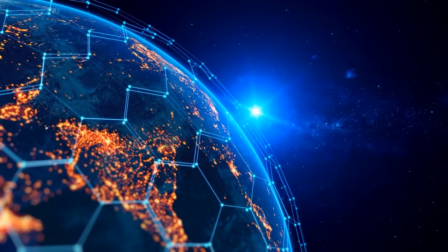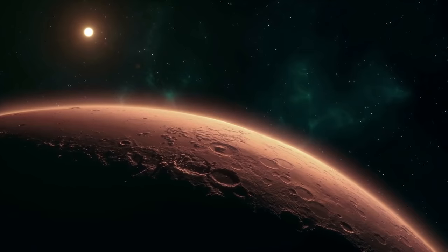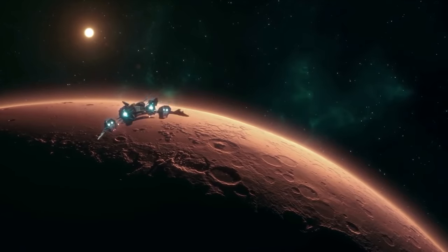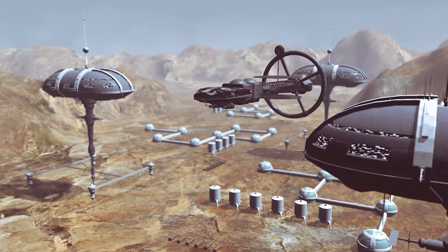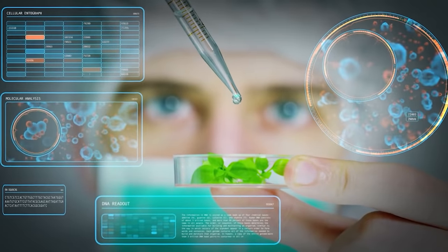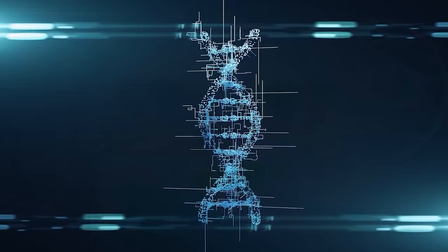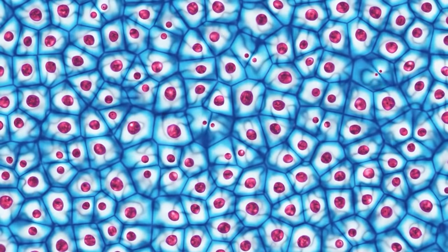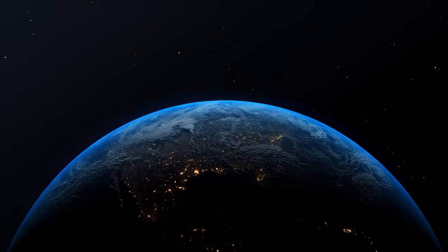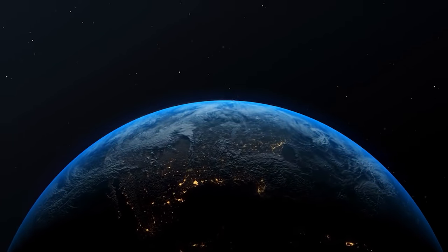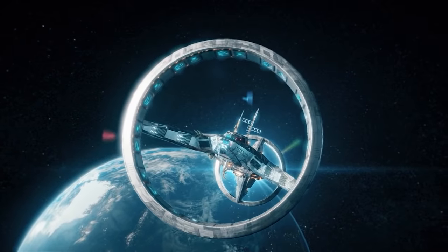Once our civilization can reach type 2, we will no longer suffer from energy-related problems in practical life. This will also eliminate poverty. We would be able to freely travel to and return from any planet in the solar system, and would take our first steps toward colonizing space. In the field of life science, our regenerative medicine technology would reach the genetic level, and we would be capable of regenerating any part of the body. At our current pace, it's said that our civilization will become a type 2 civilization in 100,000 to 1 million years.